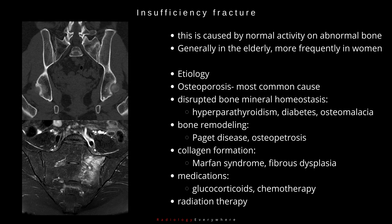The next category is insufficiency fractures, caused by normal activity on abnormal bone. These are generally seen more frequently in elderly women. Etiologies include osteoporosis, disrupted bone mineral homeostasis such as hyperparathyroidism, diabetes, and osteomalacia, as well as bone remodeling conditions including Paget's disease, osteoporosis, and collagen formation abnormalities such as Marfan syndrome and fibrous dysplasia.